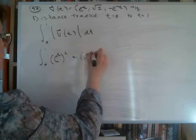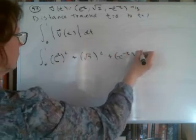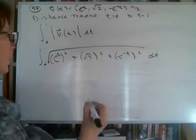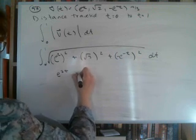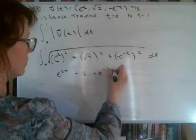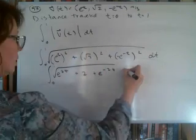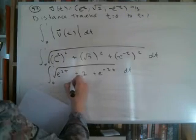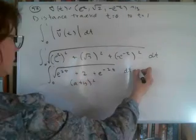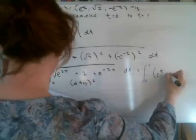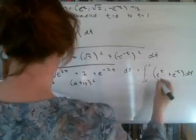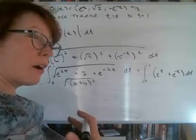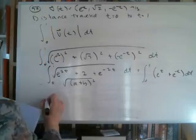I'm going to square it, square root it, and then take the integral. There's some algebra involved — this looks like e to the 2t plus 2 plus e to the minus 2t, from zero to one, dt. Once I square everything out and bring it together, this is the form of an a plus b quantity squared. I've got this squared and I'm taking the square root, so it simplifies to e to the t plus e to the minus t. They cancel, and I can integrate that.